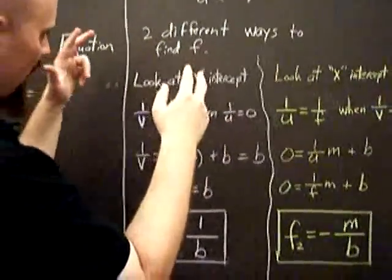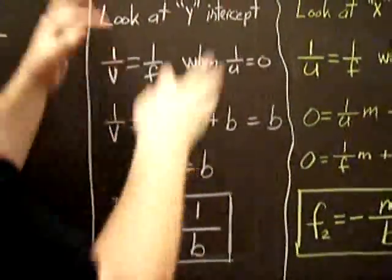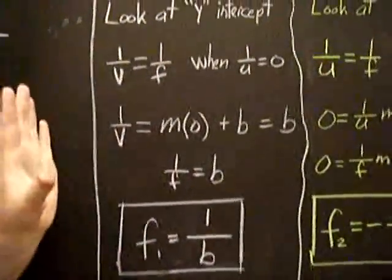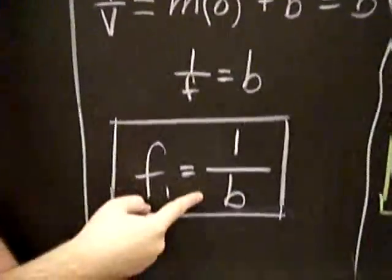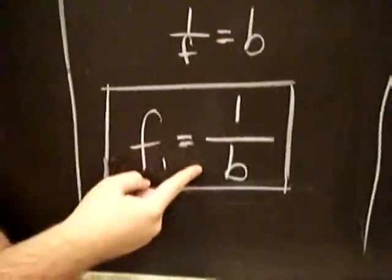First, we could concentrate on the Y-intercept. Through the miracles of modern algebra, we can derive F1, which is exactly what we expect, is the reciprocal of the intercept.